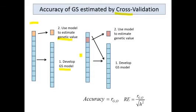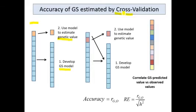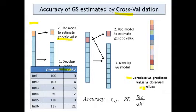You repeat this process, taking a different set of 90% to develop the model and using it to predict the values of a different 10%. You keep doing this until you obtain the predicted value of every individual in your training population. Then you simply correlate those predicted values — those GEBVs — with the observed values.